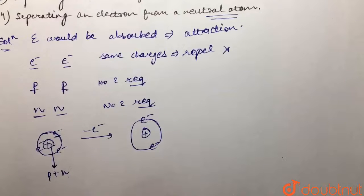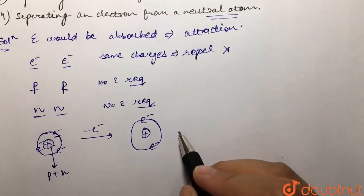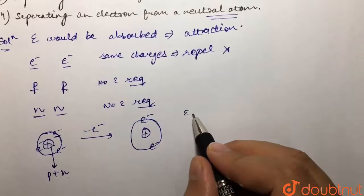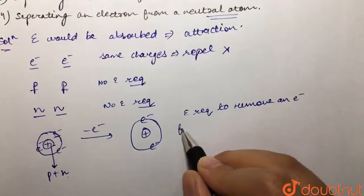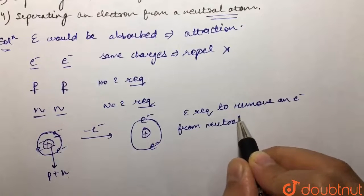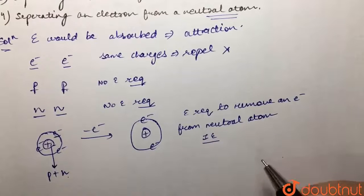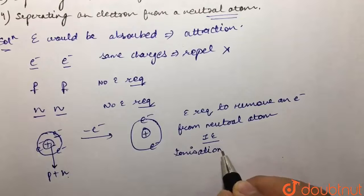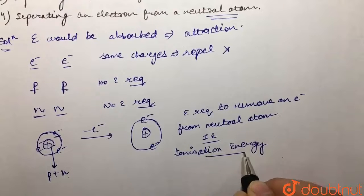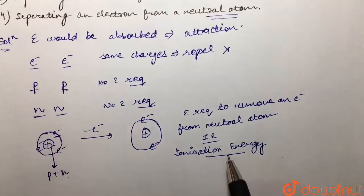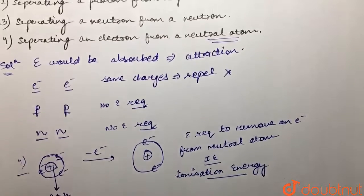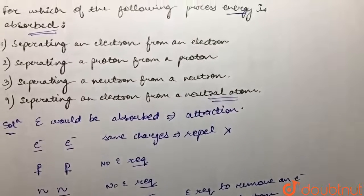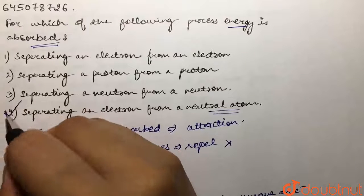This process would require energy because there is a force of attraction between the electron and the nucleus which contains protons and neutrons. The energy required to remove an electron from a neutral atom means energy is absorbed. Hence, the fourth option — separating an electron from a neutral atom — is the correct answer.